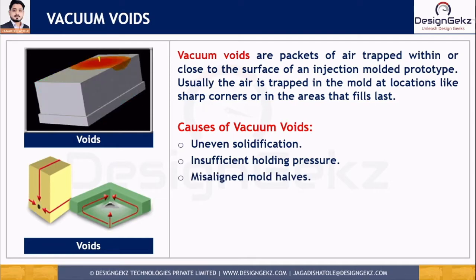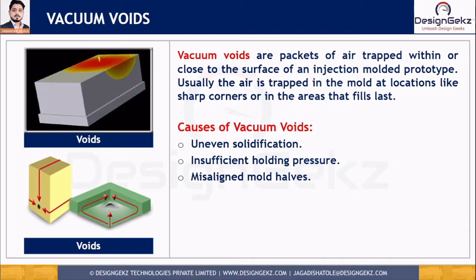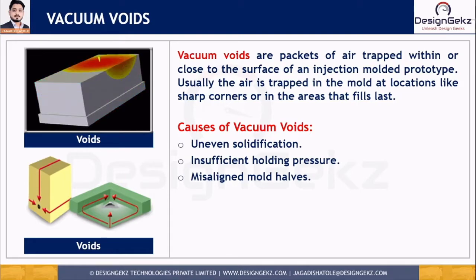The third cause is misaligned mold halves. Voids can also develop in a part cast from a mold where the two halves are improperly aligned.